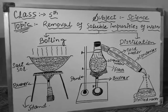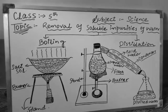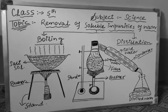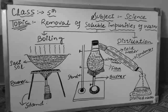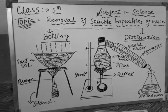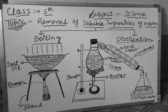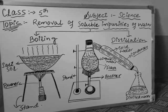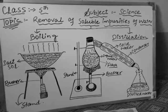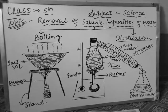Assalamualaikum dear students. Today we will study the removal of soluble impurities from water. Yesterday we studied how to remove soluble impurities from water — we discussed two processes: filtration, sedimentation, and decantation. We removed them easily. But if we talk of soluble impurities like salts, we cannot remove them using those processes.